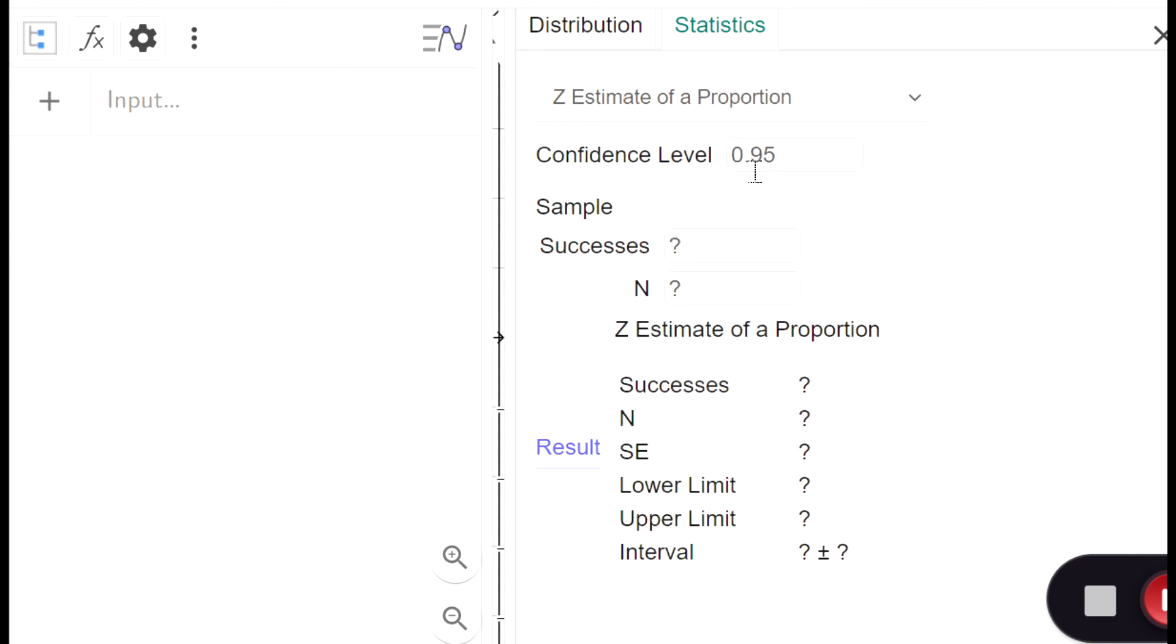Our confidence interval was 90%, so it's 0.90. Our number of successes were how many people brought their phone to the bathroom - that's 241. Our n is how many people did we ask - we asked 1000 people. And then we have our result down here.